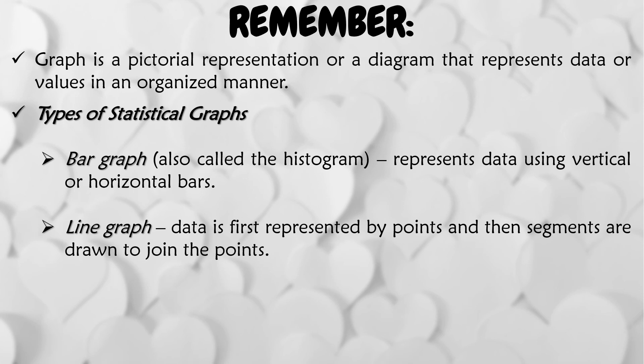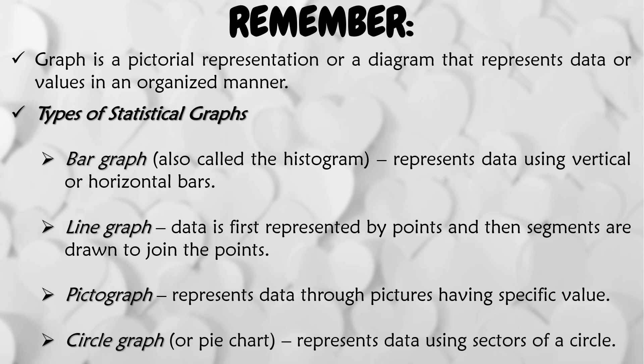First is the bar graph or also called as the histogram. It represents data using vertical or horizontal bars. Next is the line graph. Data is first represented by points and then segments or drawn to join the points. Third is the pictograph. It represents data through pictures having specific value. And the last is the circle graph or the pie chart. It represents data using sectors of circle.